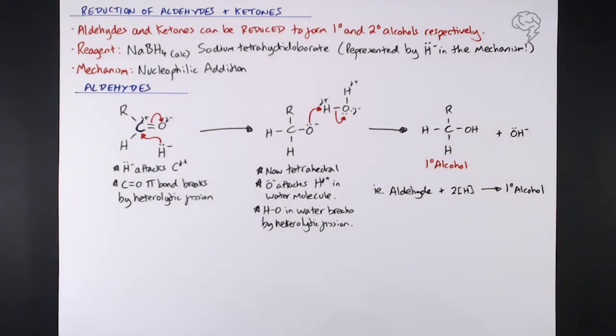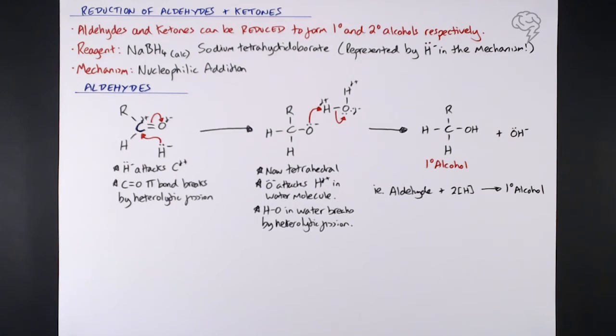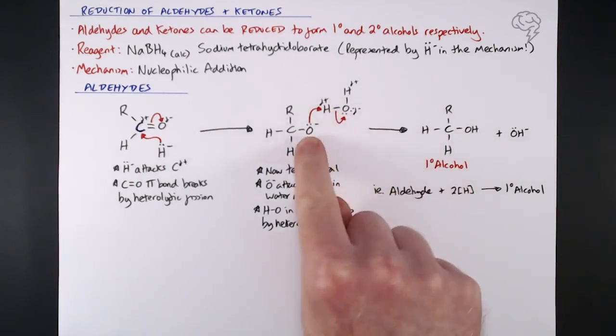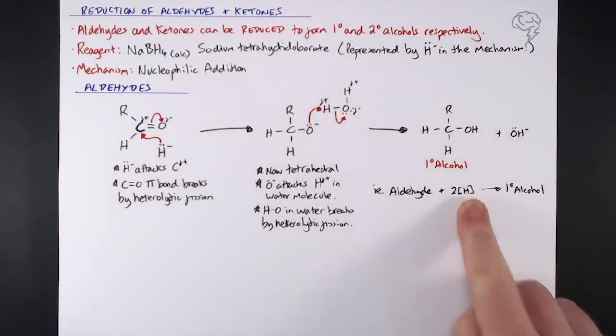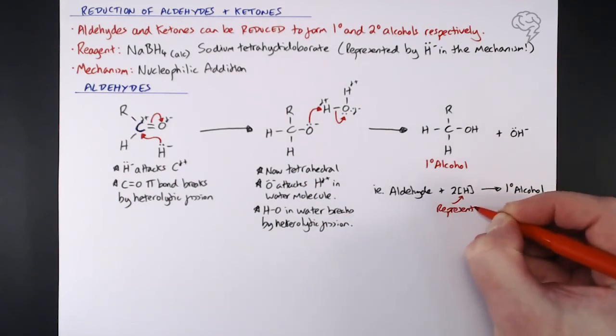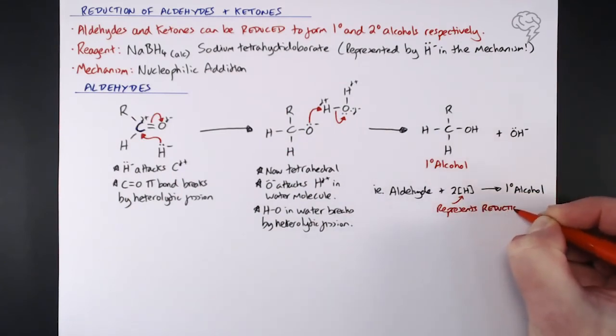This time we're reducing it, so the H in square brackets represents reduction. Aldehyde plus 2[H] gives us a primary alcohol. If you notice, one H we're adding, the second H we're adding - that's where those two H's come from. That H in square brackets represents reduction.